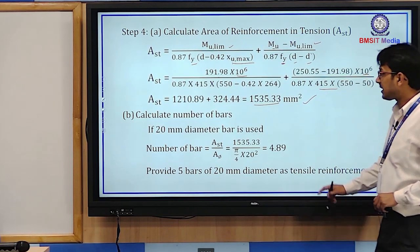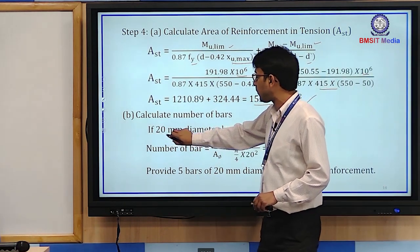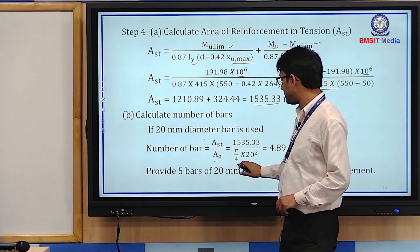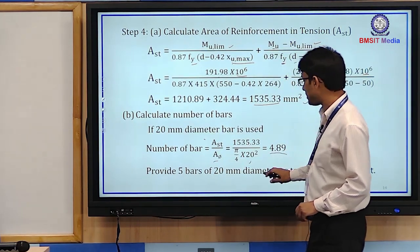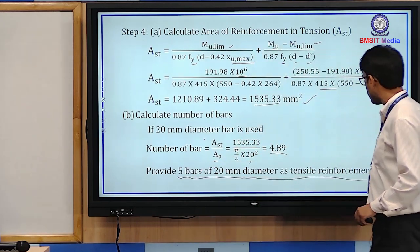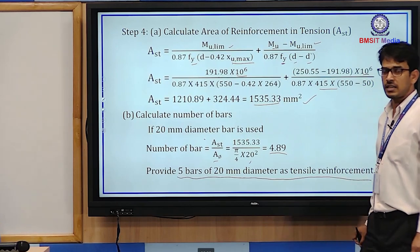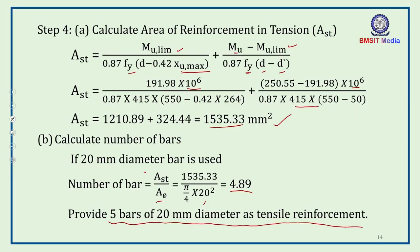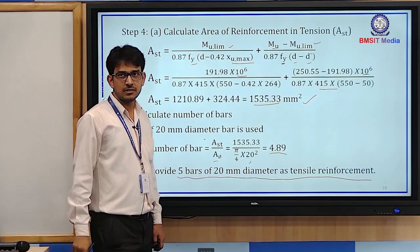Provide 5 bars of 20 mm diameter as tension reinforcement. This is how we calculate the area of steel in the tension zone and determine the number of bars to provide.